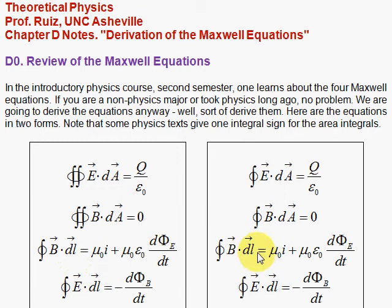Sometimes books will use a DS, lowercase s for arc length. I'm using a DL here for length and this is a loop. E stands for electric field, B stands for magnetic field.